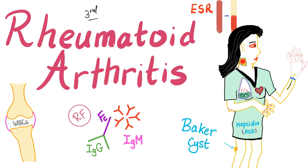You have subluxation of the cervical spine called atlanto-axial subluxation, scleritis and episcleritis — you might perforate your sclera. The typical patient is a 40 to 50 year old female named Rose who has rheumatoid arthritis. With that being said, let's get started.